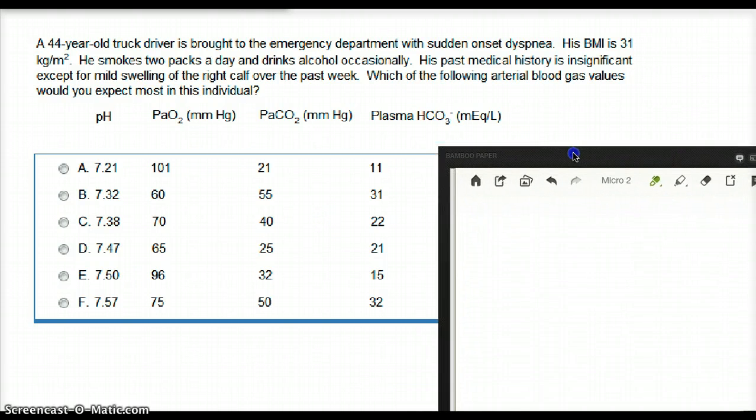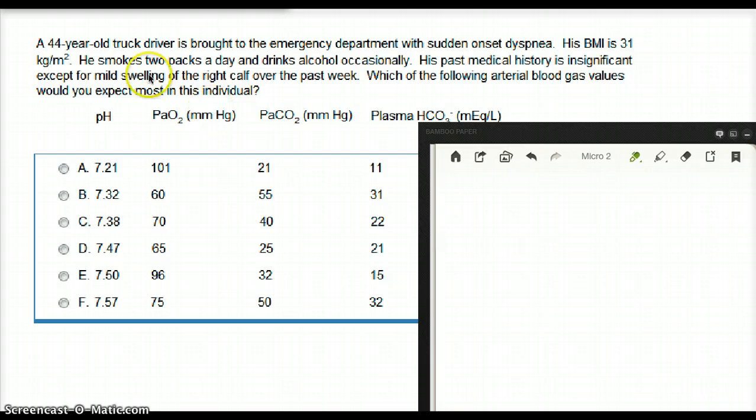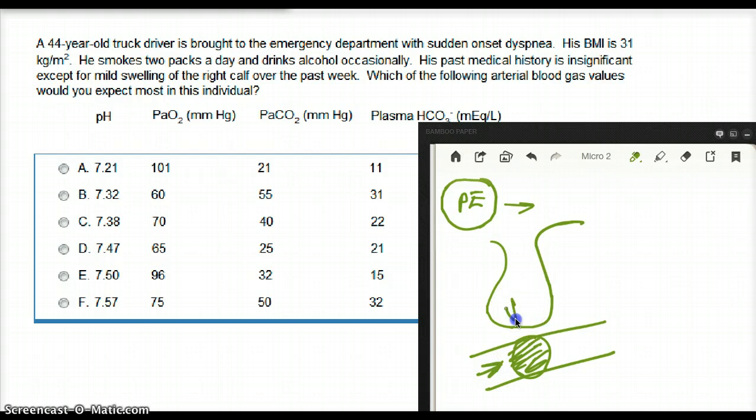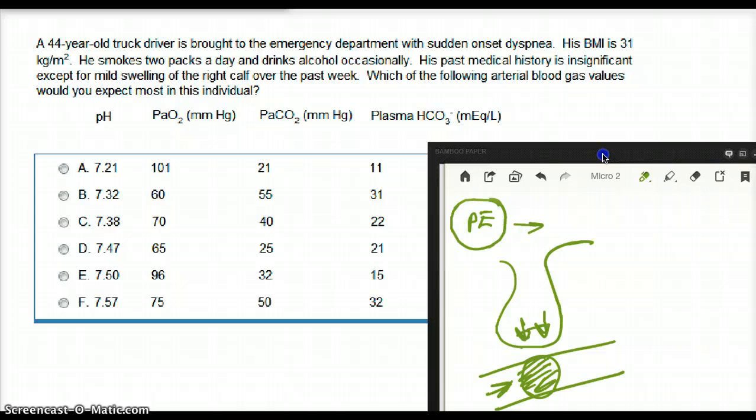So, this is quite obvious from this question that this person, who is a truck driver, he has a PE. So, whenever someone has a PE, what happens? They go into dyspnea. Why do they go into dyspnea? Because they have lack of perfusion. So, this is our alveoli, this is our blood vessel, and our PE is right here. So, they have lack of perfusion, but they have enough ventilation. There is a ventilation-perfusion mismatch.